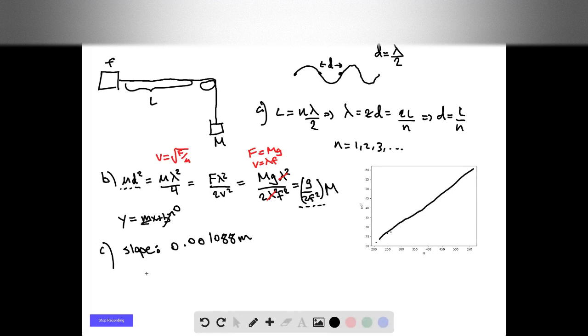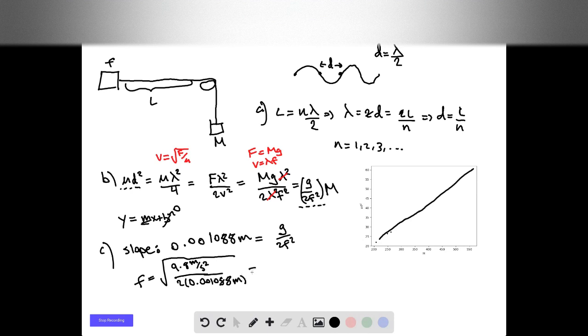Based on this slope, we want to determine the frequency f. We can determine that like this. We know that this is going to have to be equal to g over 2f². So that means f is going to be the square root of 9.8 meters per second squared over 2 times 0.001088 meters. And that's equal to 67.1 hertz.